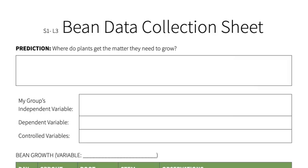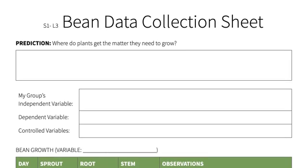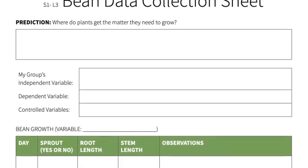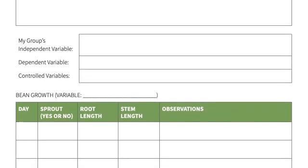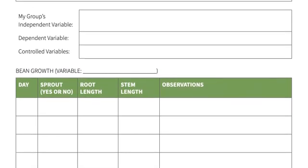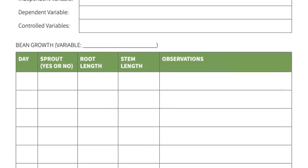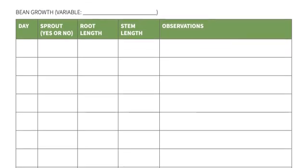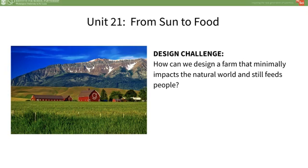Refer students to the bean data collection sheet to make a prediction about where plants get the matter they need to grow. Discuss the types of data that will be collected. Discuss the importance of each type of data or observation and set up an observation schedule. We recommend observations every two days for a couple of weeks. Next, introduce the unit topics—how energy and matter move through ecosystems and how living organisms get the things they need to grow.